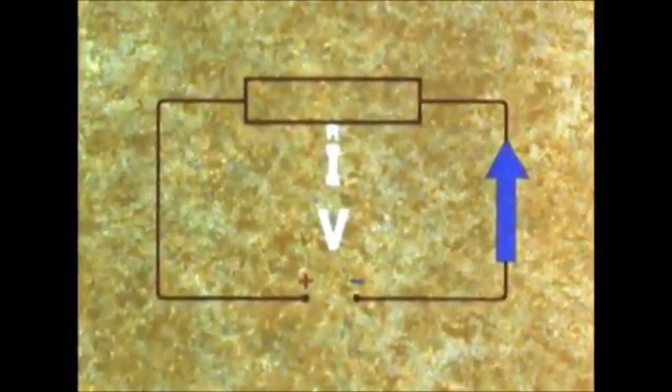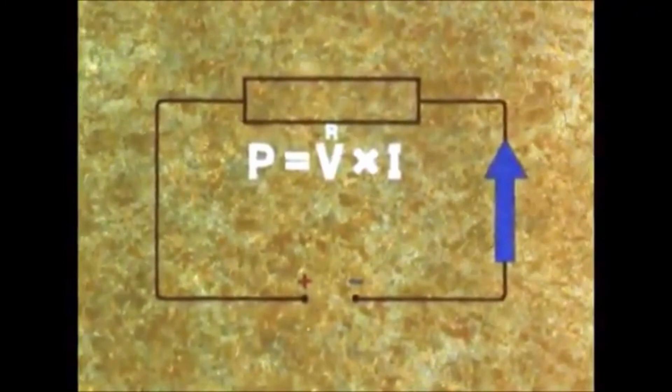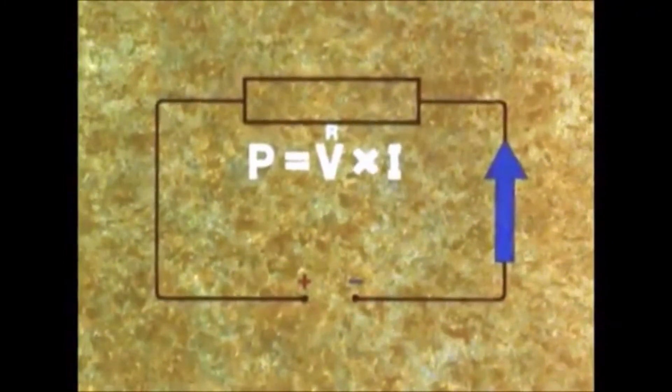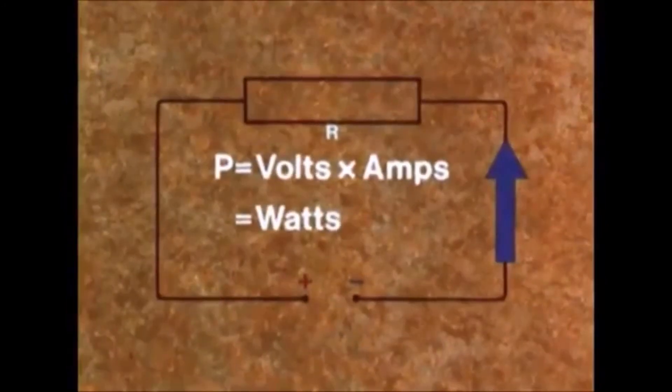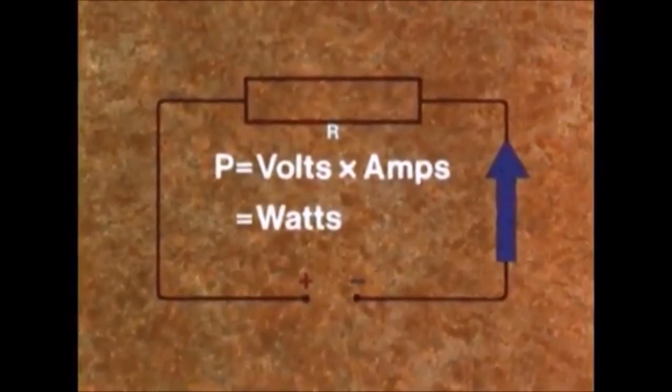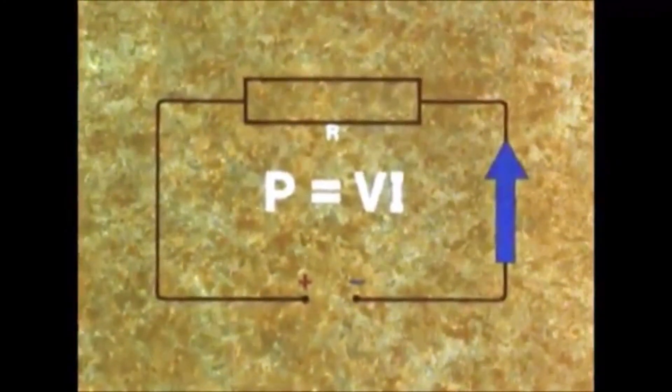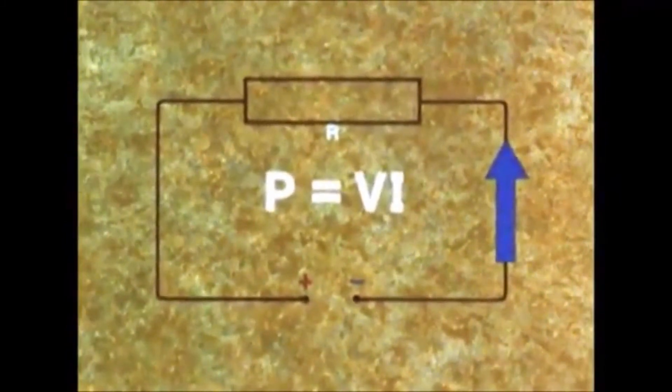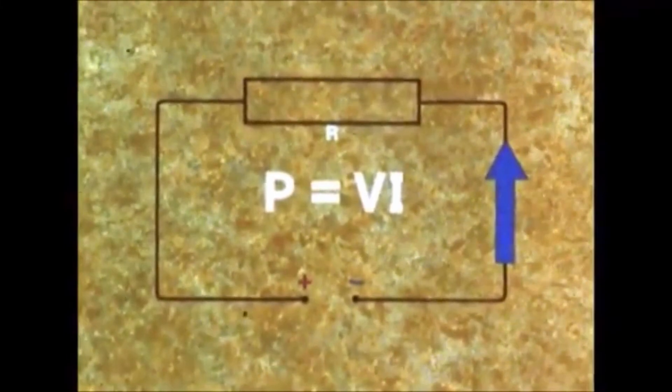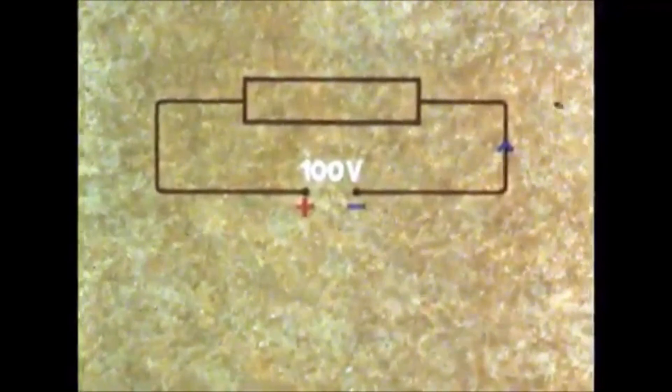So P, the power absorbed in the circuit, is given by V times I, volts times amps, and is measured in watts W. This is the power formula: P equals VI. For example, in this circuit, V equals 100 volts and I equals 2 amps, so the power absorbed P equals VI, that is 200 watts.